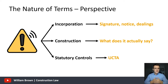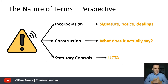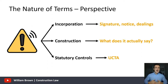Starting with incorporation, we're going to look at the rules of signature, notice, and course of dealings, and whether through those mechanisms an exemption clause has validly been incorporated into the agreement. The rules we look at under incorporation apply to any form of express term of contract — not just an exemption clause; any other express terms also have to be incorporated correctly. We then look at construction: is the exemption clause wide enough to cover the loss envisaged? And lastly, the statutory controls under the Unfair Contract Terms Act 1977 — whether it was reasonable to include such an onerous provision and whether it falls foul of that test of reasonableness.